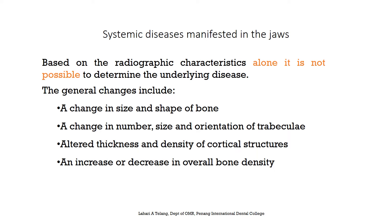It is important to bear in mind that based on radiographic characteristics alone it is not possible to determine the underlying systemic disease. The general changes in the bone can probably give you the suspicion that there could be systemic involvement. These changes include a change in size and shape of bone, change in number, size and orientation of trabeculae, altered thickness and density of cortical structures, and an increase or decrease in overall bone density.